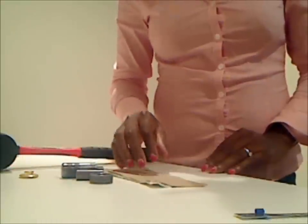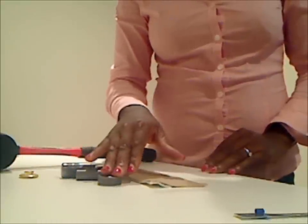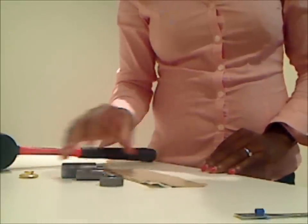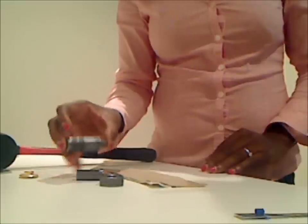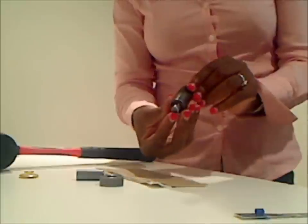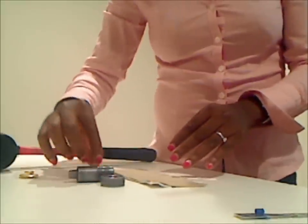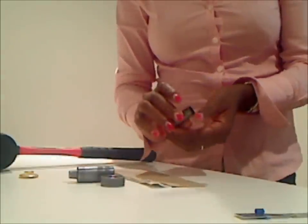What you have here would be the anvil part of the setter, and this will be the mandrel, I believe it's called, and you also have the hole punch.